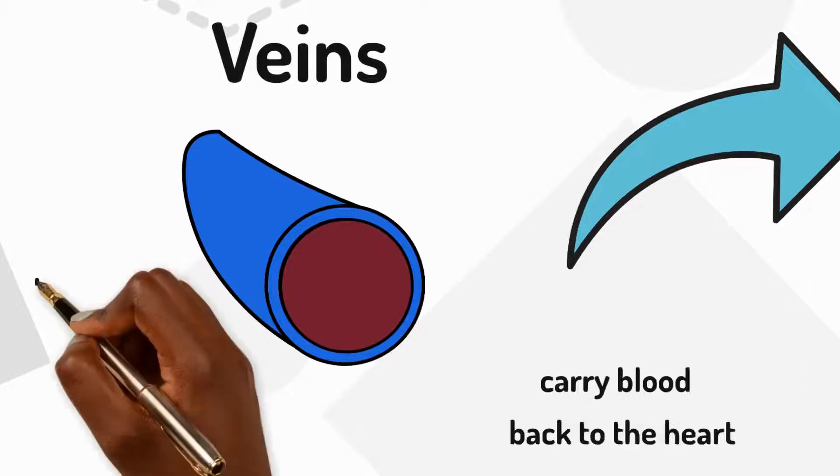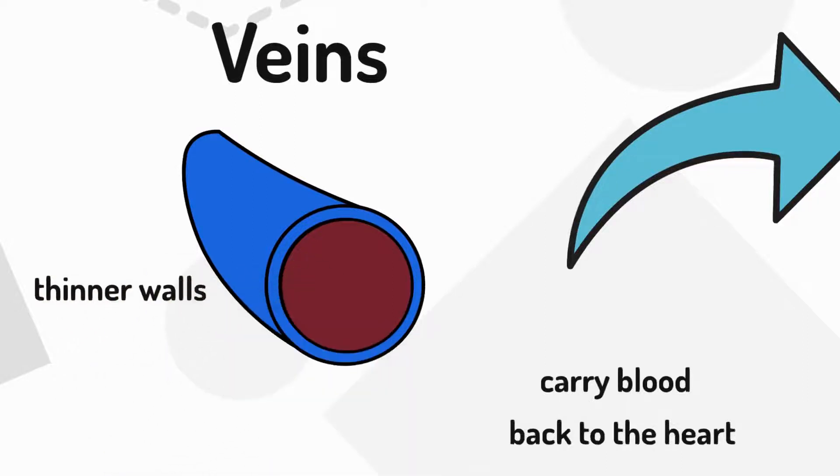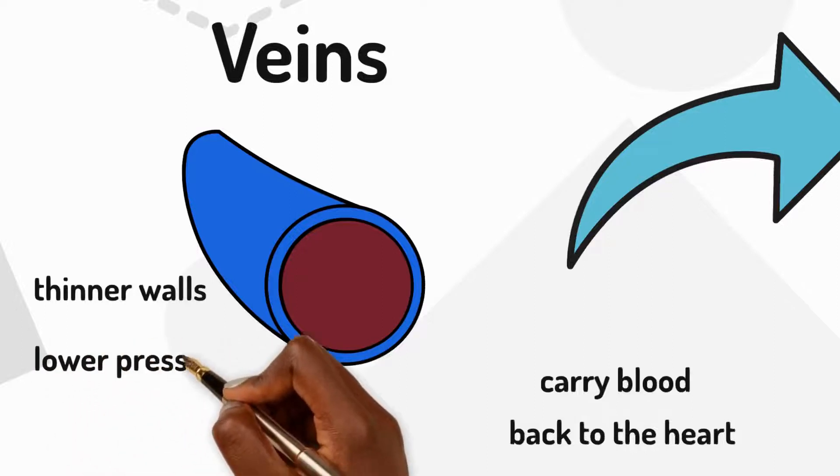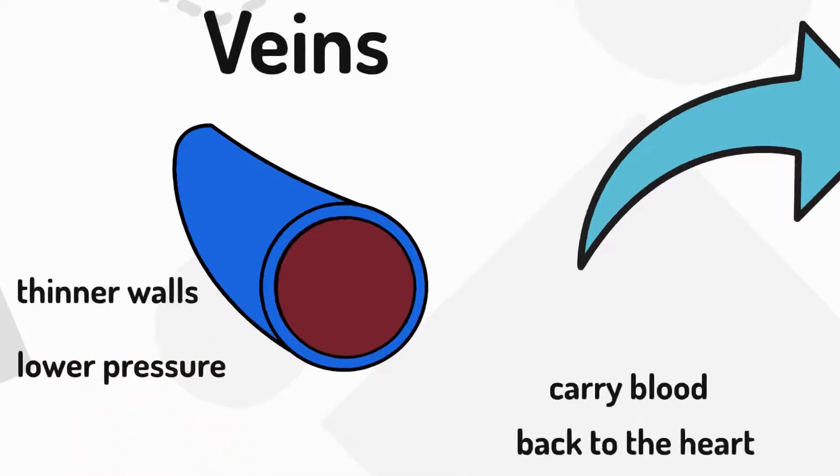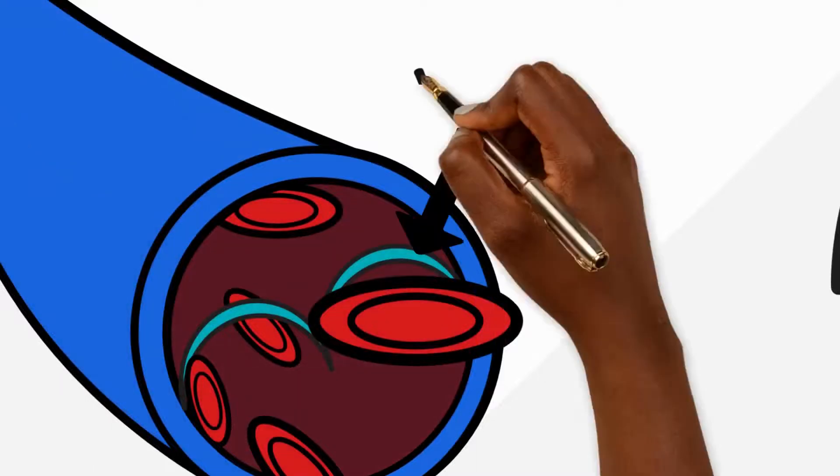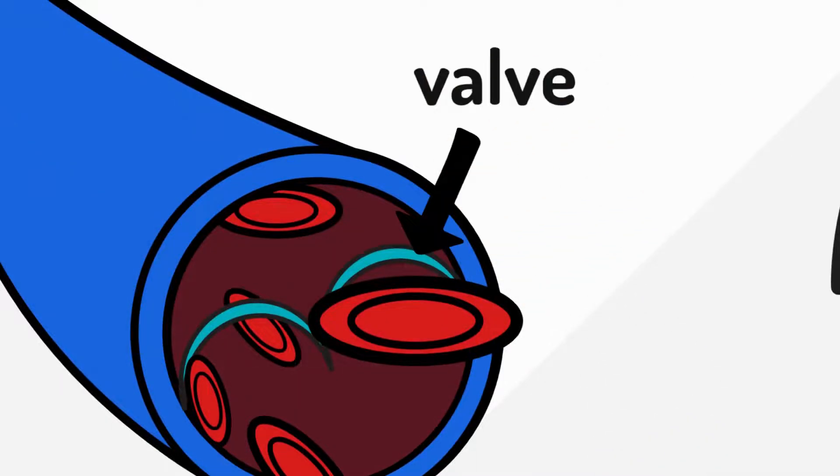Unlike arteries, veins have thinner walls and blood inside them is not under high pressure. Veins have valves inside them to make sure the slower-moving blood does not flow backwards.